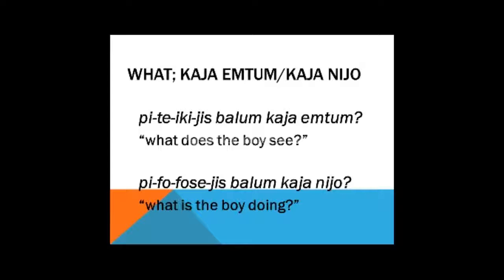Let's look at the distinction between kaya yemtum and kaya yemtum. Kaya yemtum is used when talking about what thing — something material. Kaya yemtum is used more when talking about a process or an event. So we've seen: pita yi kai yis balum kaya yemtum, what does the boy see? If I wanted to say what is the boy doing, the verb changes, and I'd use kaya yemtum instead — since doing something is a process, not a material thing: pita yi kai yemtum kaya yemtum, what is the boy doing?